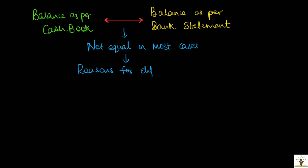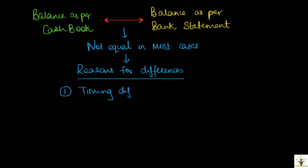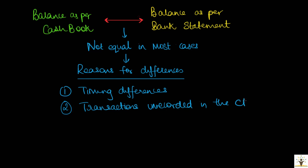The differences in the cashbook and bank statement shall be studied under three classifications: first, timing differences; second, transactions recorded in the bank statement but not in the cashbook; and third, errors committed in the cashbook or the bank statement.